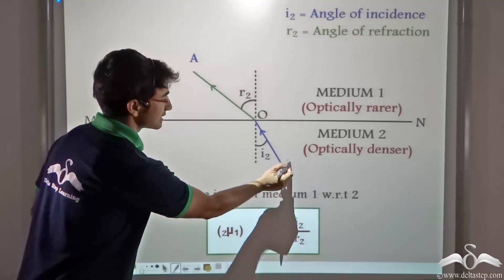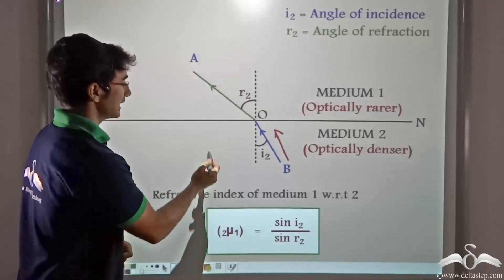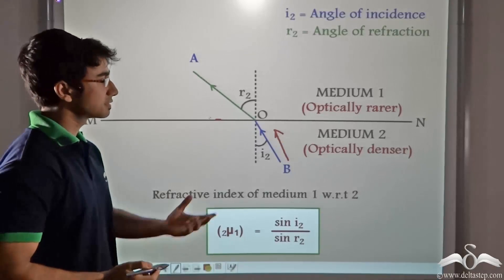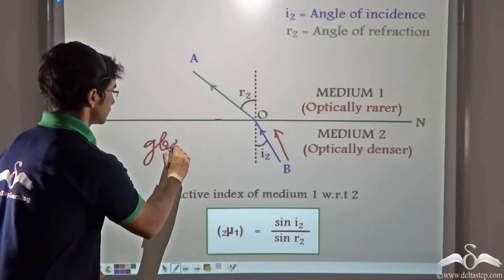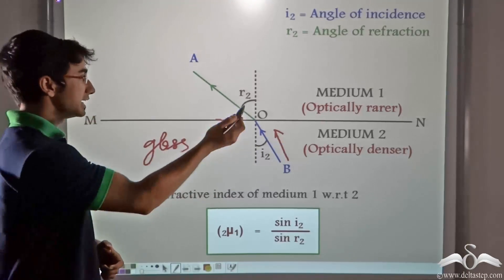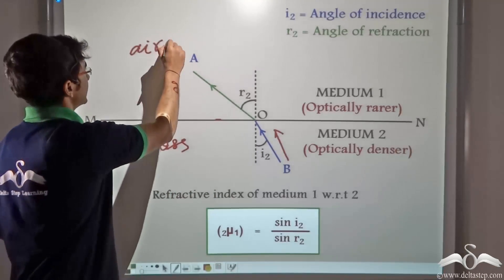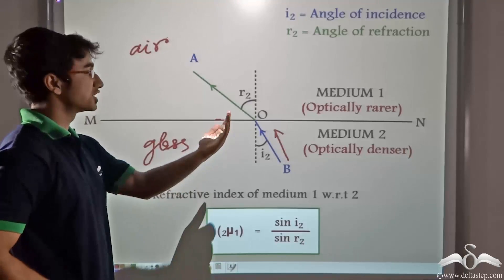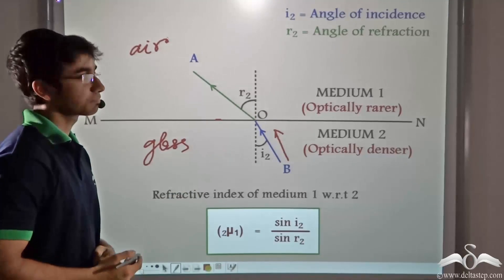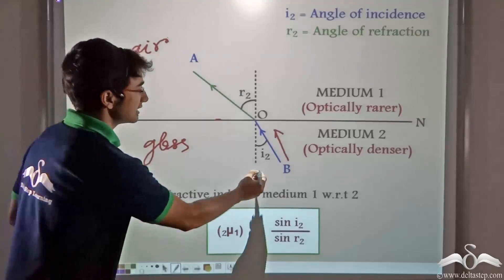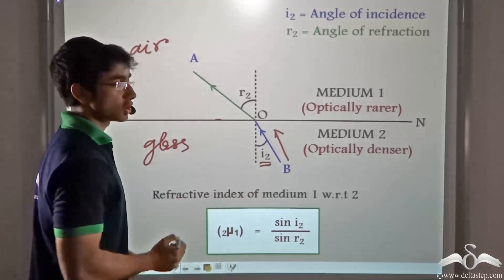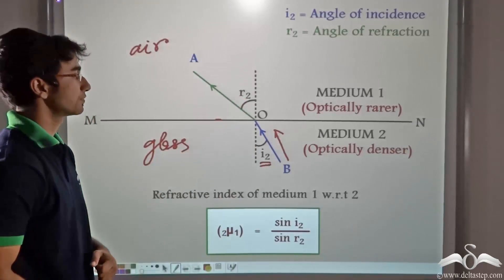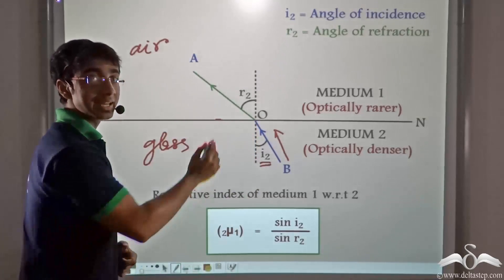When the ray of light is incident from glass to air at the glass-air interface, it undergoes refraction. Since medium 2, that is glass, is optically denser than medium 1, that is air, the refracted ray bends away from the normal. In this case, the angle of incidence is I2, which the incident ray makes with the normal inside glass, and the angle of refraction is R2, which the refracted ray makes with the normal in air.